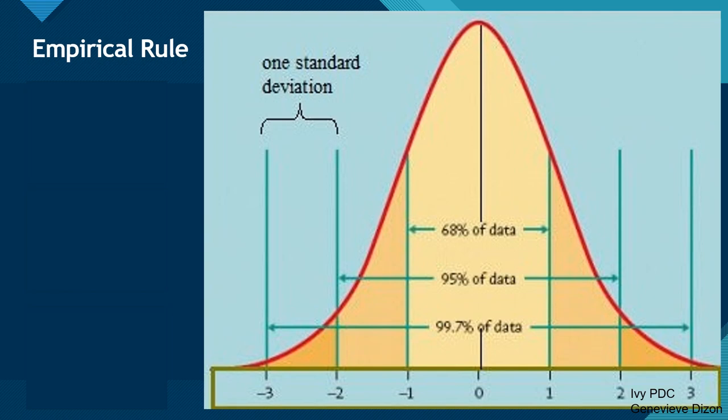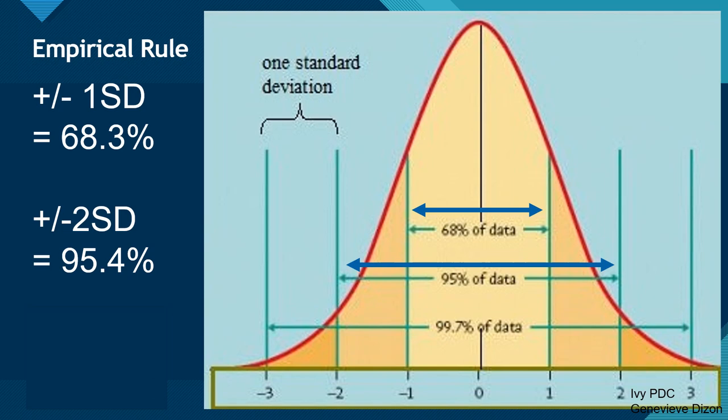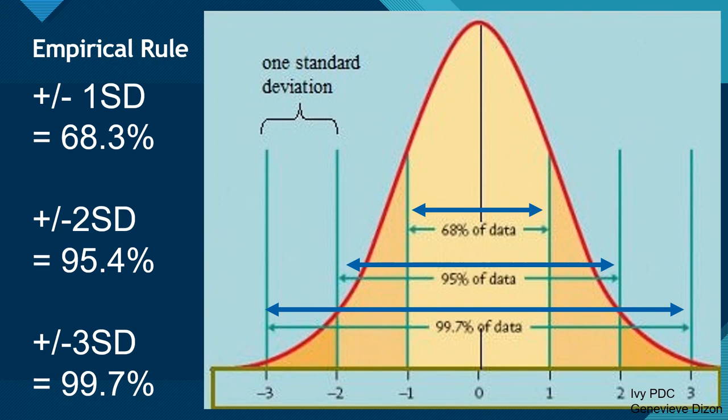We have an empirical rule for the normal distribution. About 68% of all data values should fall within positive/negative 1 standard deviation from the mean, which makes sense since the bulk of results should be in the middle. About 95% of data values should fall within positive/negative 2 standard deviations. And about 99.7% of all data values should fall within positive/negative 3 standard deviations, meaning only 0.3% should fall outside that range.